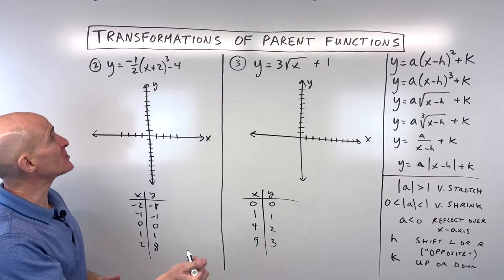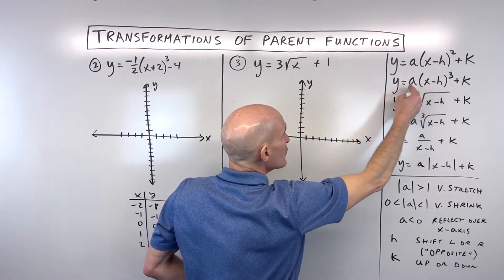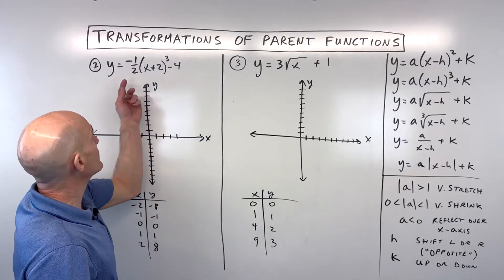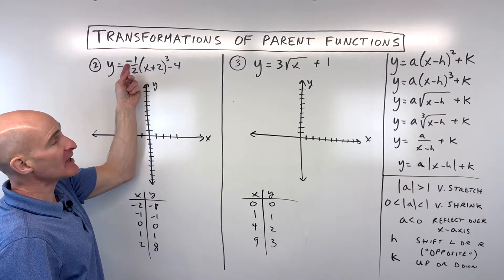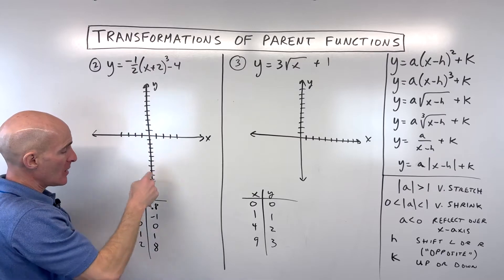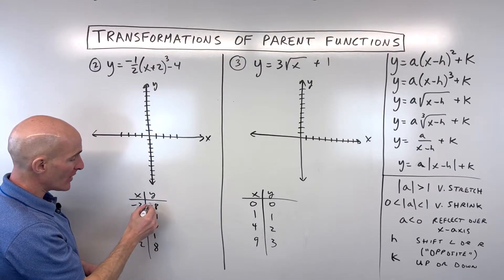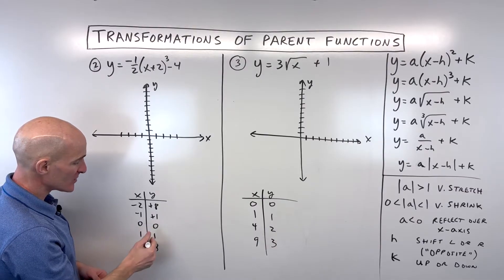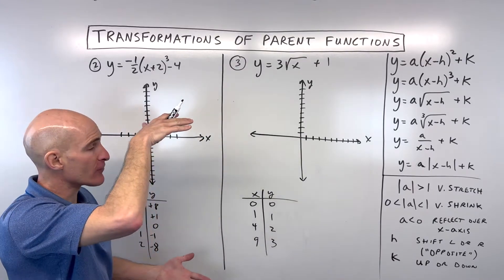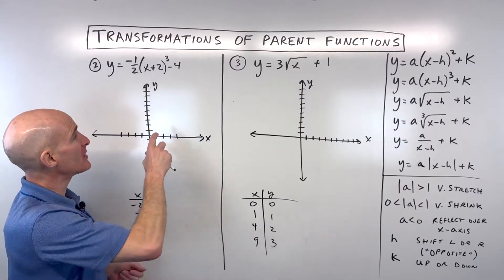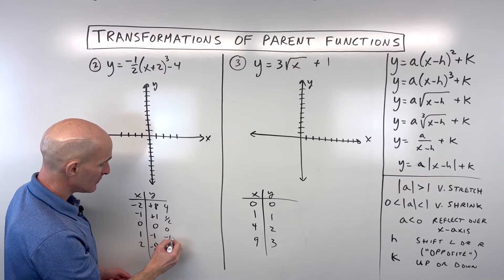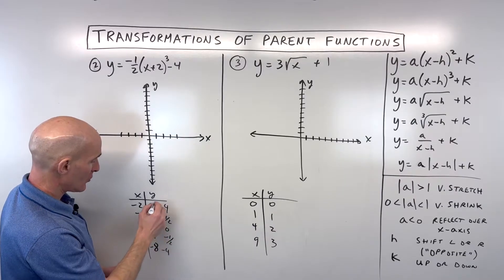Working through the transformations: the negative reflects the graph over the x-axis, making all y values the opposite — multiply by negative 1, so negatives become positives and positives become negatives. Then the ½, being between 0 and 1, is a vertical shrink by a factor of ½, multiplying all y values by ½.